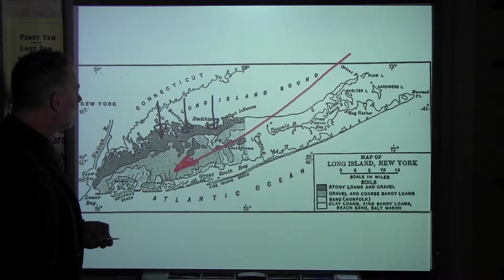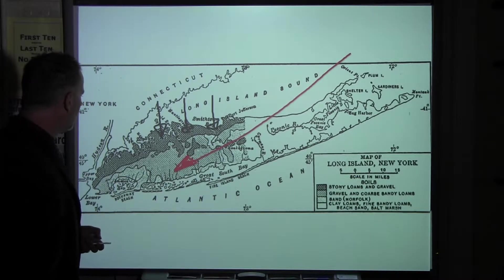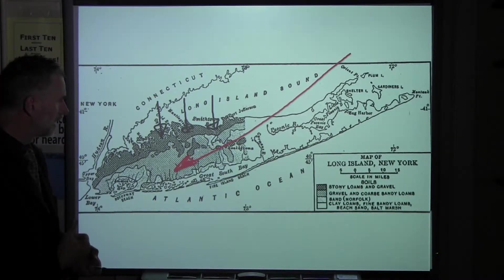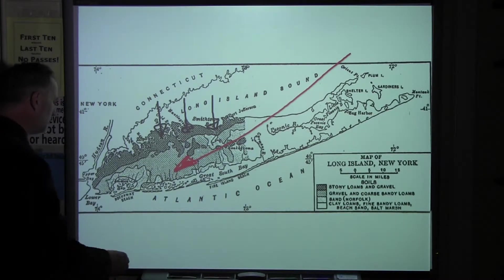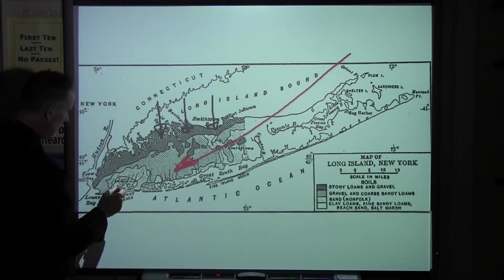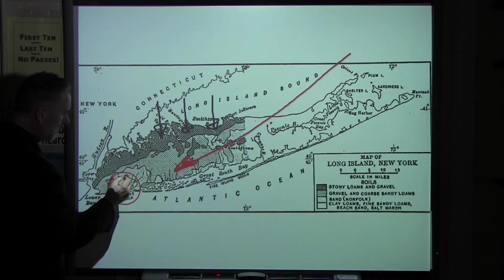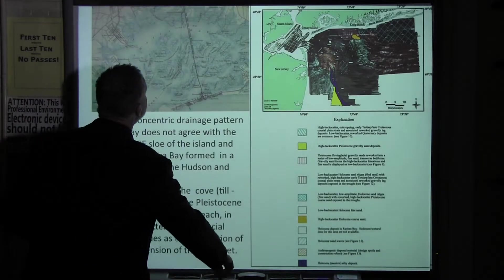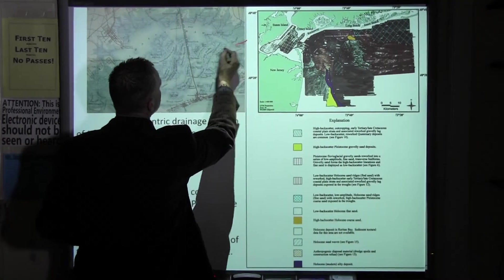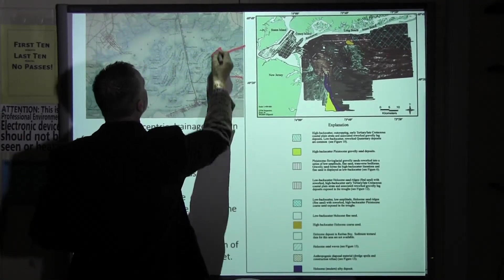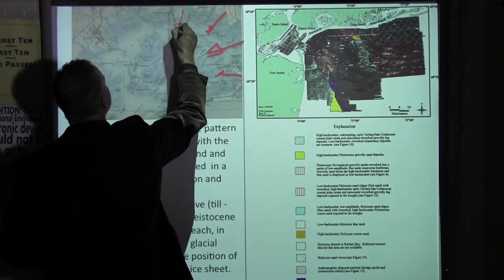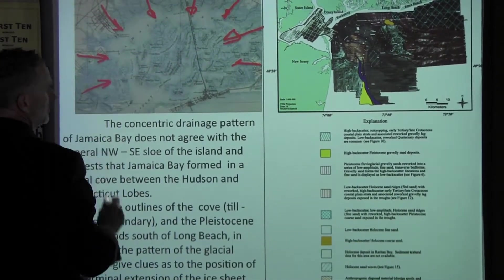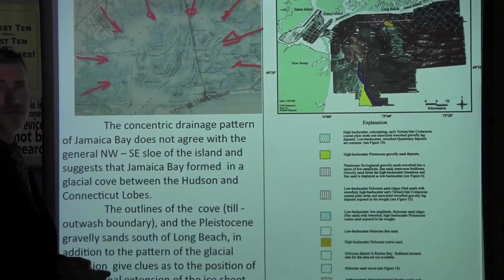The question is: how far exactly did the glacier move south? There are only a few clues left, and we're going to follow those clues. One clue came from the region of Jamaica Bay. If we look closer at the map of Jamaica Bay, we're going to see that it has a concentric drainage pattern, which suggests that Jamaica Bay, during the glaciation, was free of ice.